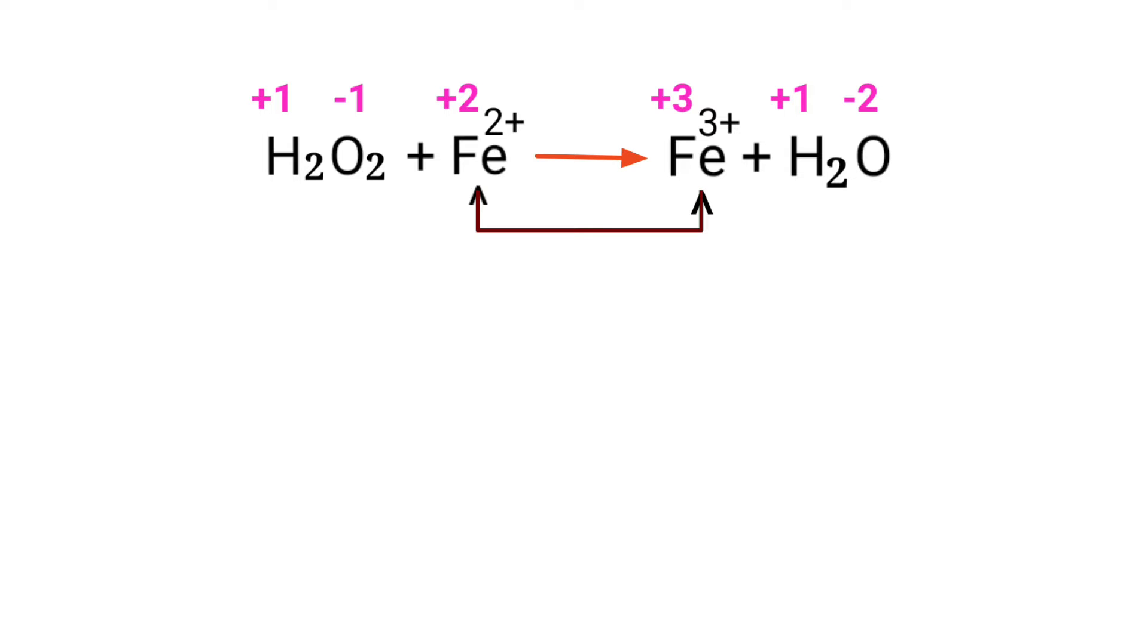In this equation, iron has charge of plus 2 and it's changing into plus 3, so iron is being oxidized. The oxygen has charge of minus 1 and it's changing into minus 2, so oxygen is being reduced.